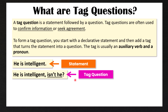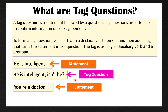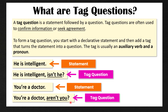We also use tag questions to confirm information. For example, 'You're a doctor' — this is a statement. If I say 'you're a doctor' I'm quite certain that you are a doctor, but what if I'm not quite sure? 'You're a doctor, aren't you?' In this case I want to confirm information — I'm pretty sure you're a doctor, I just want you to confirm that.